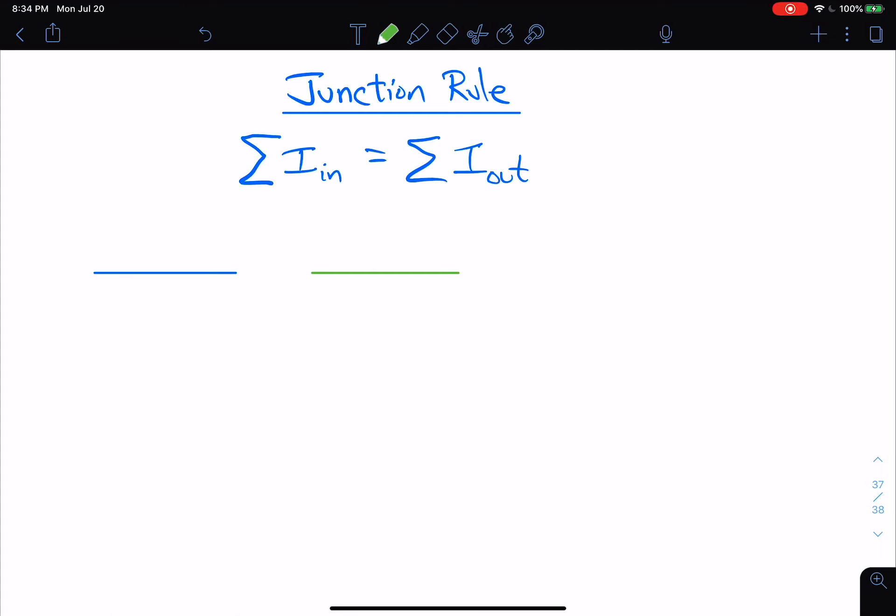Now, the junction rule immediately begs the question, what is a junction? A junction is the point where two or more wires come together. So you can see right here I have two wires, I have a blue one, and I have this green one. And so I'll bring them together. And right there, right here, that's the junction.